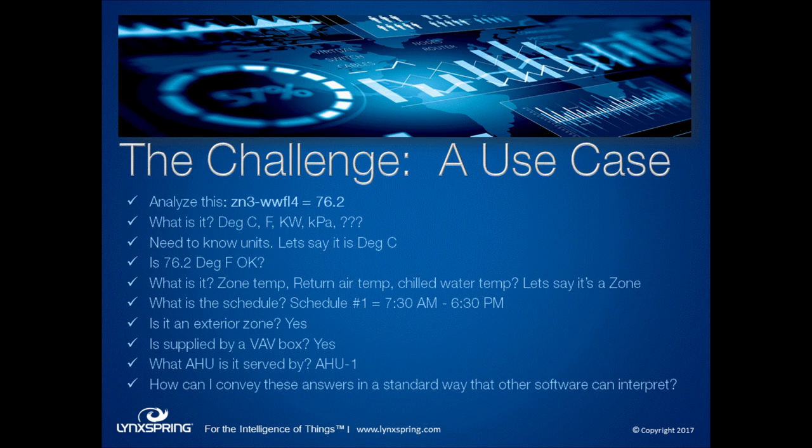Before I can analyze that, before I can say it's okay, I need to know what it is. First, I need to know units — is it degrees C or degrees F? What if it's KW, kilopascals, RPM? Historically we've used units, so it might say degrees Fahrenheit. Is 76.2 degrees Fahrenheit okay? I couldn't answer that if I don't know more. Is it a zone temperature? That's fairly warm — might be a little uncomfortable. But if it's return air temperature, 76.2 degrees Fahrenheit might be exactly where I want it. If it's chill water temperature on a hot summer day, that wouldn't be a good value.